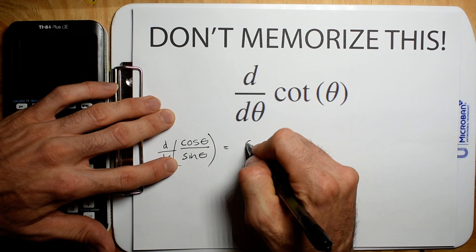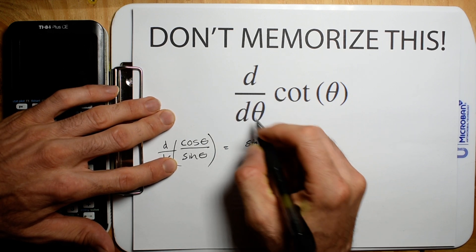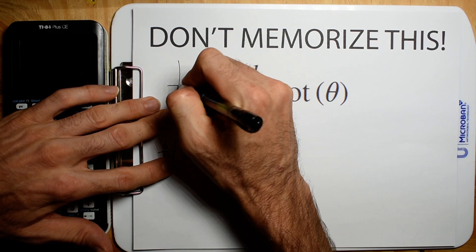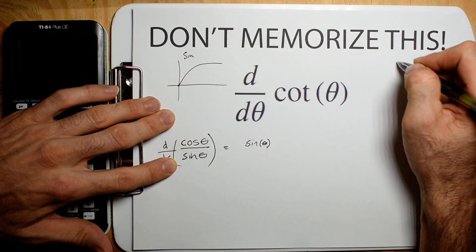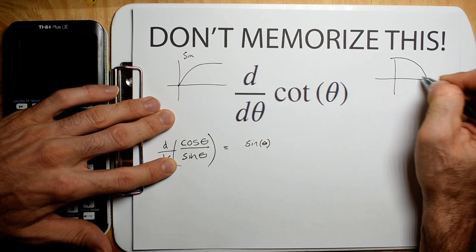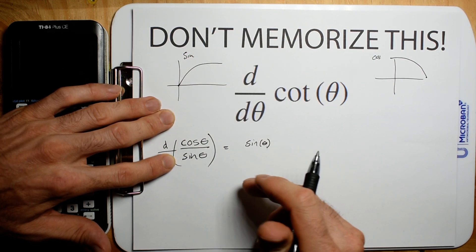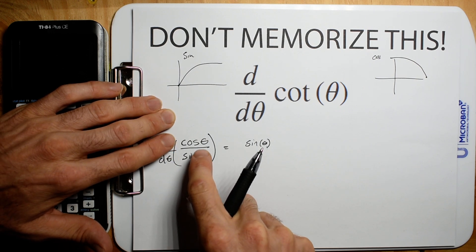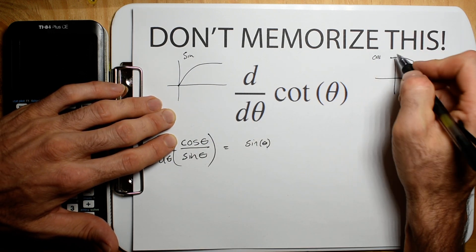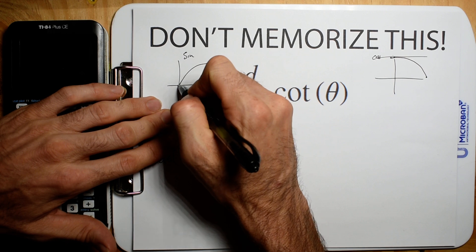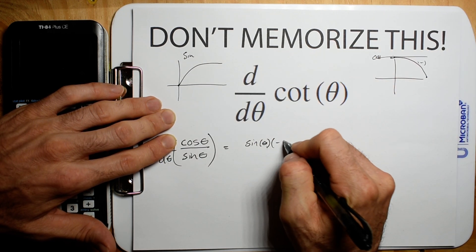So we're going to have sine theta. Let's draw our sine. And then cosine starts up here, goes down. Okay, so we have bottom d top. Taking the derivative of this. Must be 0 at 0. That's sine. But it's negative slope. So we've got negative sine.